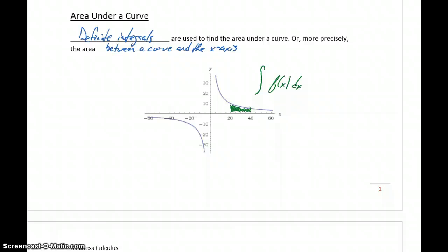But to make that a definite integral, we add an upper and lower bound of integration. So since we're integrating from 20 to 40, that lower bound is 20, and our upper bound is going to be 40.